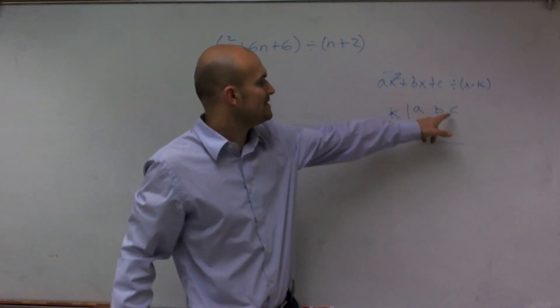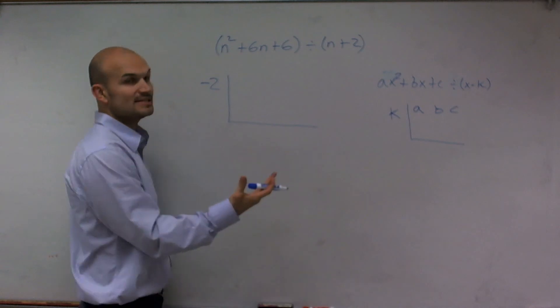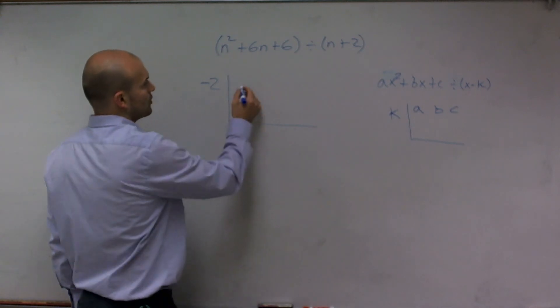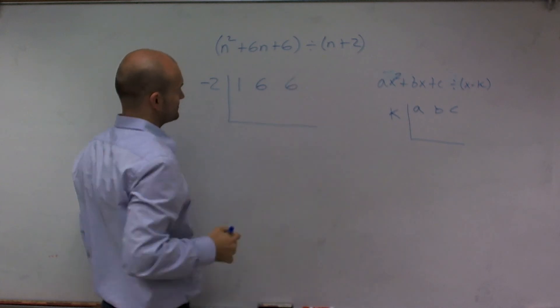And then you can see I take a, b, and c, the coefficients of each one of my terms. And make sure if you're missing a term, don't skip over the coefficient. So I have 1, 6, and 6.